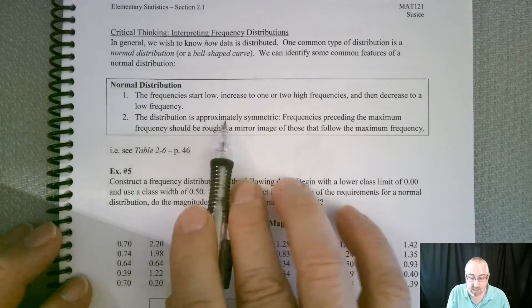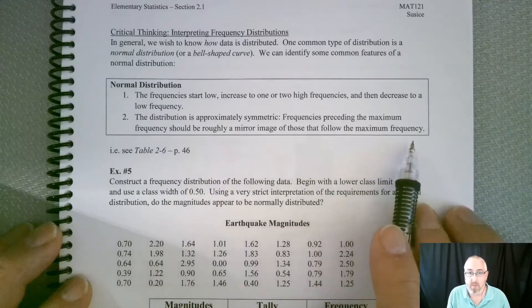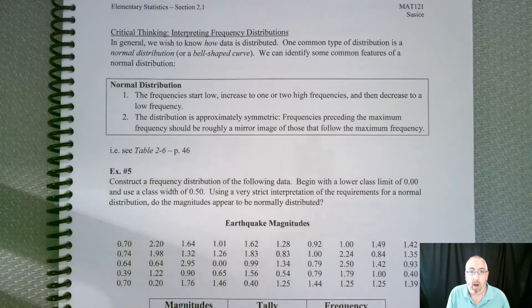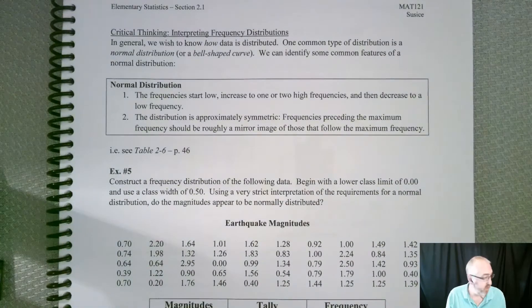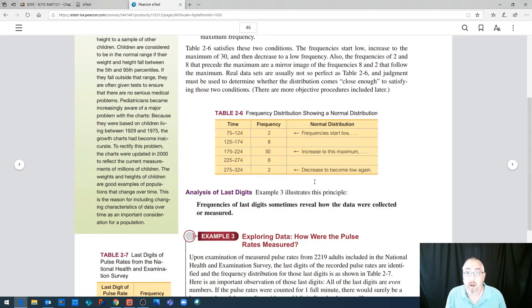The distribution is approximately symmetric. Frequencies preceding the maximum frequency should be roughly a mirror image of those that follow the maximum frequency. So I have an example on table 2.6, page 46 in your textbook. So let's jump to that real quick.